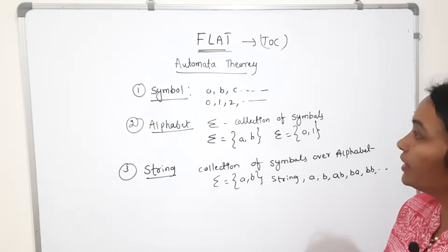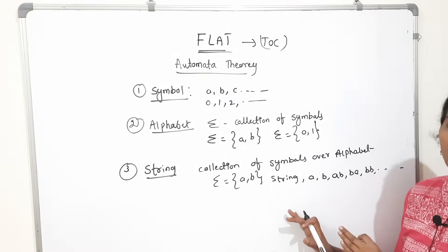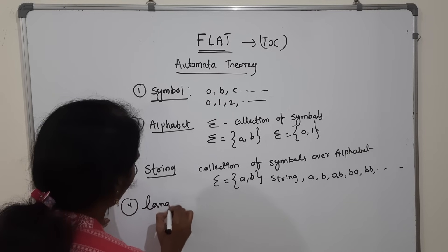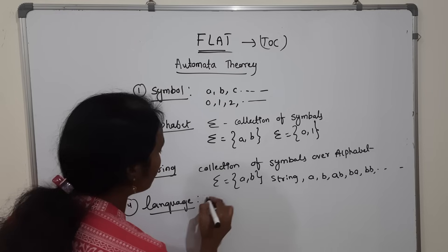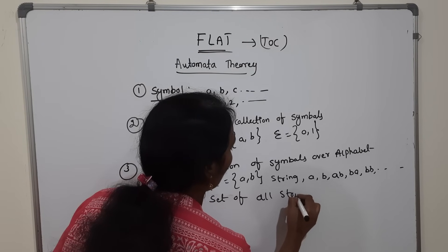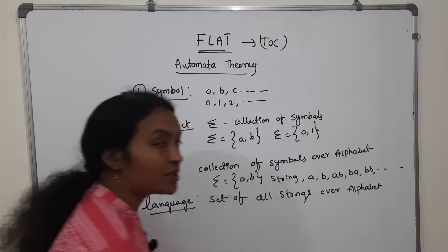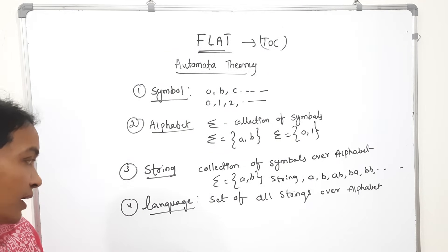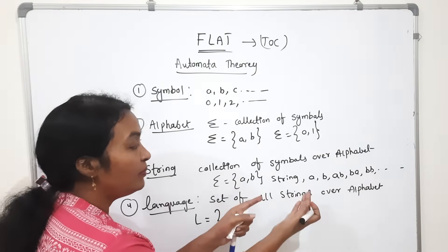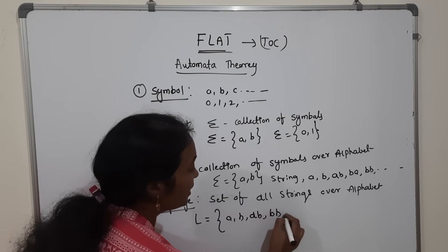Language — a language is the set of all strings over the alphabet. Language is a set of all strings. If I write language L, I can write strings like A, AB, BA, BB, AA, and so on — a set of all strings represents the language.